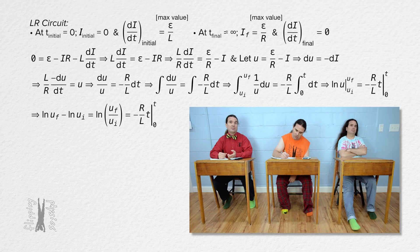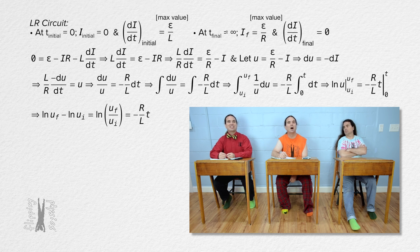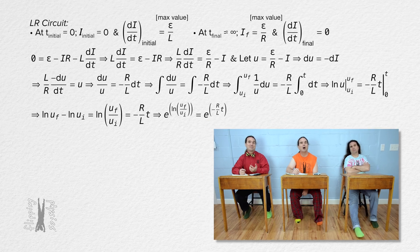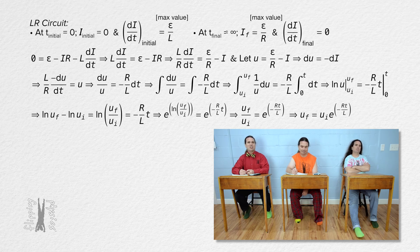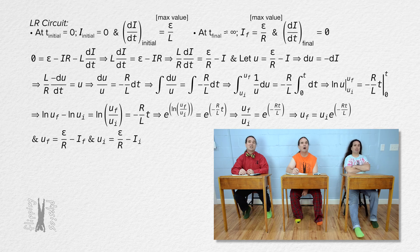Substituting in limits on the right-hand side gives us negative resistance divided by inductance times time. This is just like deriving RC circuits and drag force equations, because now we take e to the power of both sides. On the left-hand side, e to the power of natural log of u-final divided by u-initial is just u-final divided by u-initial. We can multiply both sides by u-initial. Here, u-final equals emf over resistance minus current-final, and u-initial equals emf over resistance minus current-initial. However, current-initial equals zero, so u-initial actually equals just emf over resistance.